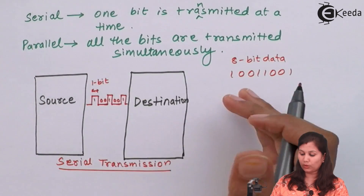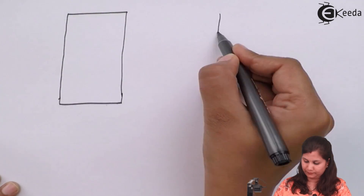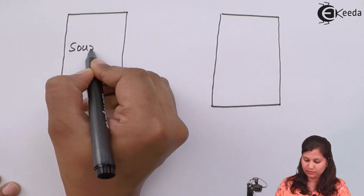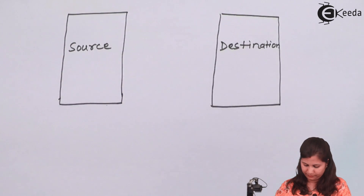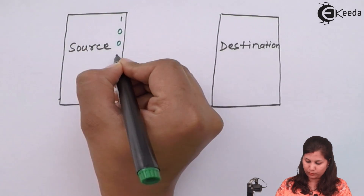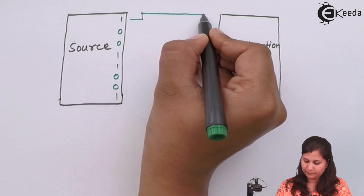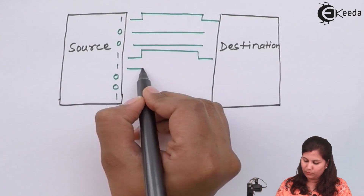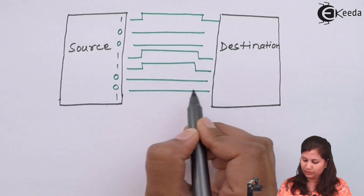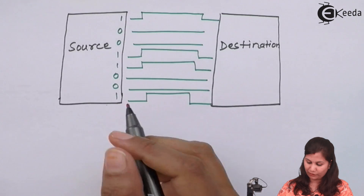In the case of parallel transmission, all eight bits are simultaneously transmitted. If we denote it by a diagram: suppose this is the source and this is the destination, with the data one, zero, zero, one, one, zero, zero, one. The first bit one is transmitted on one line, second bit zero on another, and so on — all eight bits are simultaneously transmitted. That is the case of parallel transmission.